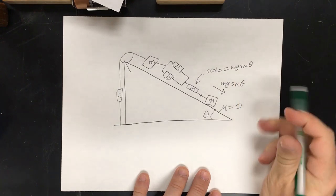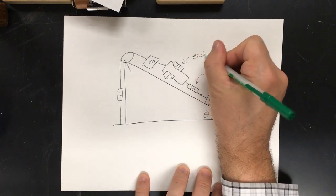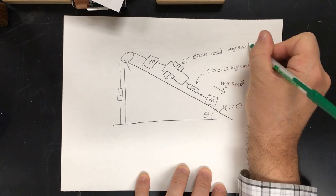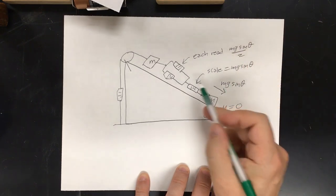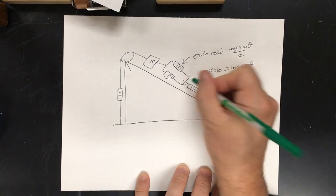Or, if you're only reading mass, would equal m sine theta. Then, each of these, mg sine theta over two, because it splits this force. Because this point is not moving.